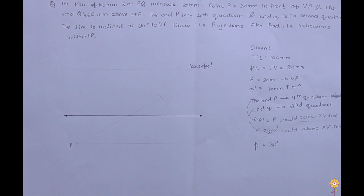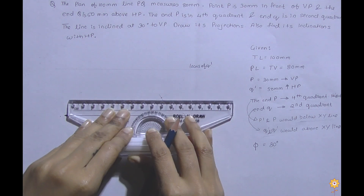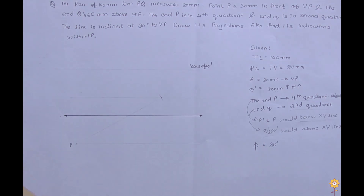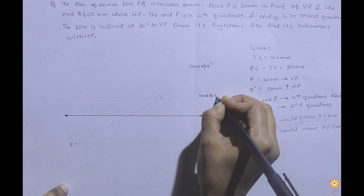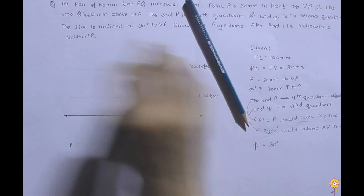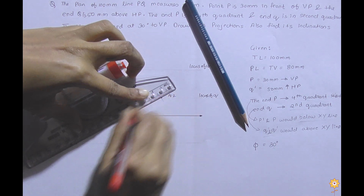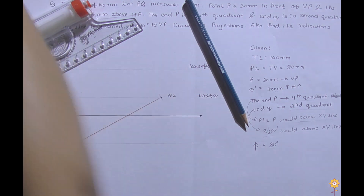Now I have P and Q on the true length line. From the top view I have one point, so I'll mark it and draw a locus — this would be the locus of Q, with P and Q2 identified. This line is my true length.